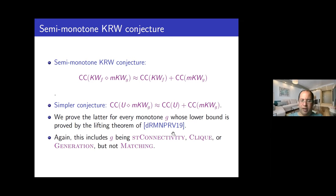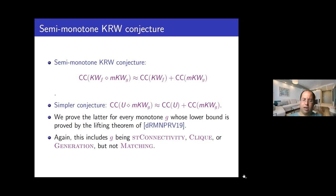We prove the simpler conjecture for every monotone function G whose lower bound is proved by the lifting theorem from Nullstellensatz degree. This is a less general lifting theorem, but it still includes many interesting functions including ST-connectivity, clique, and generation, though not the matching function.